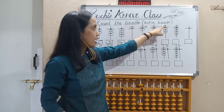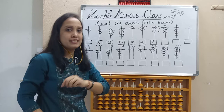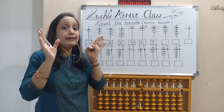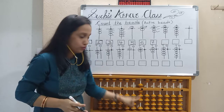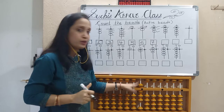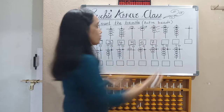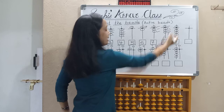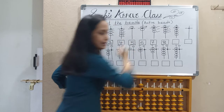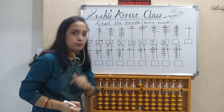Next, 1 upper bead and 3 lower beads. The upper bead touches here and 3 beads below. Don't blindly count 1, 2, 3, 4 — you will get a wrong answer. As the upper bead is there, you should start counting from 5: 5, 6, 7, 8. So the value is 8.